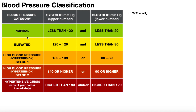We can also get a slightly elevated systolic blood pressure. This is the elevated category, where the systolic blood pressure is between 120 and 129 millimeters of mercury, but the diastolic is still less than 80. When comparing normal and elevated blood pressure, the only difference is the systolic — notice the diastolic is the same.